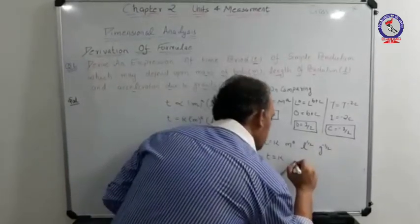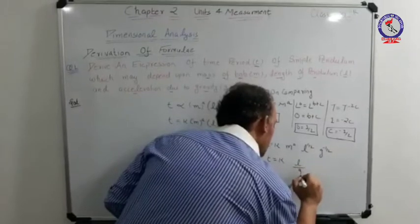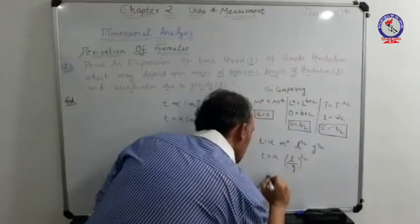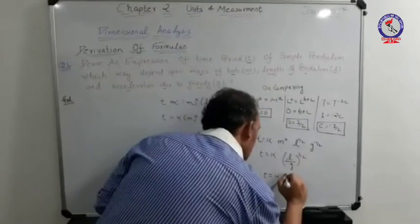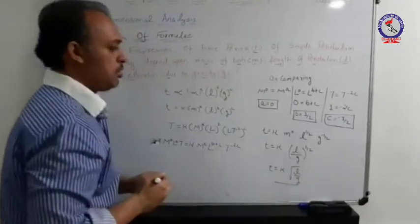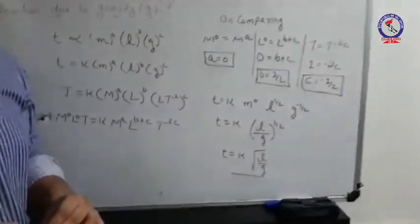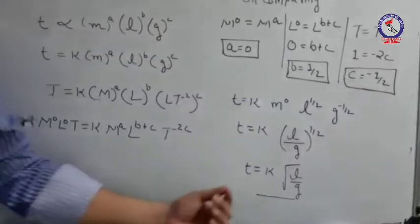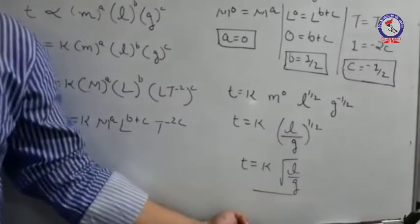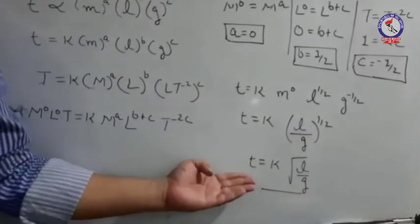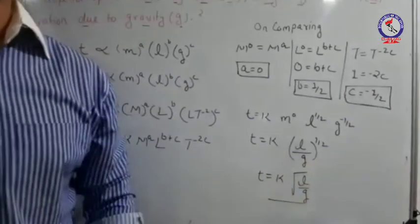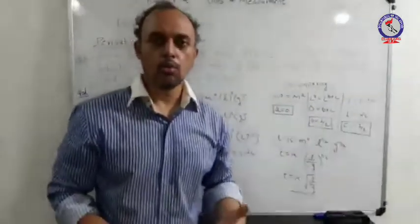This can be written as T equals K times L divided by G, all to the power 1 by 2, or T equals K times the square root of L by G. This is the final relation for the time period of a simple pendulum. Substituting K equals 2 pi, we get the well-known result T equals 2 pi times the square root of L by G, which is the desired relation.